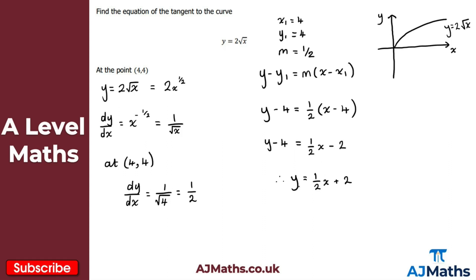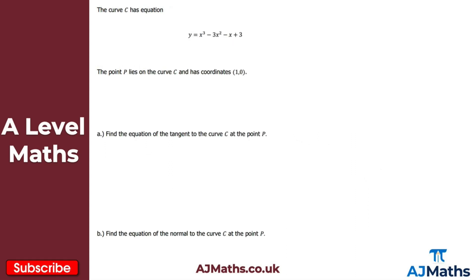You could multiply through by 2 or write it in the form ax plus by plus c equals 0, but it doesn't ask for that. So that's our solution to the first question. Now for the second question: we have the curve C with a cubic polynomial equation. We're told the point P lies on the curve C and has coordinates 1, 0. For part A, we want to find the equation of the tangent to curve C at point P. So we start by differentiating.